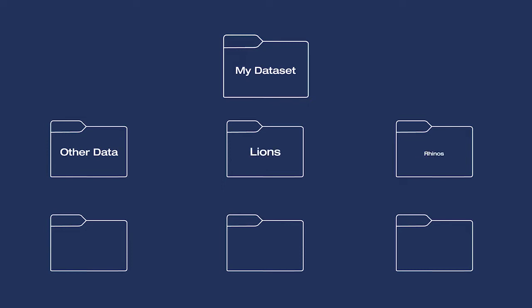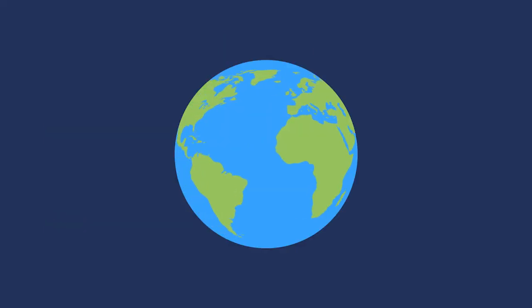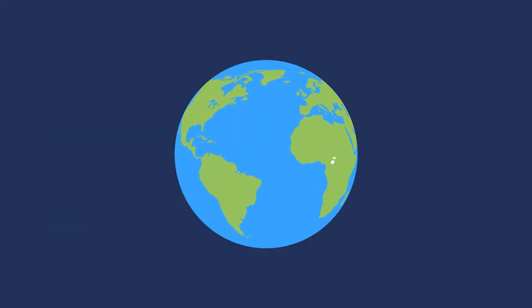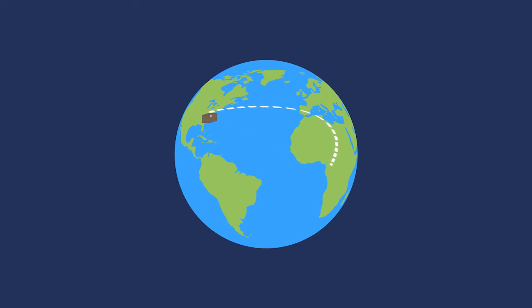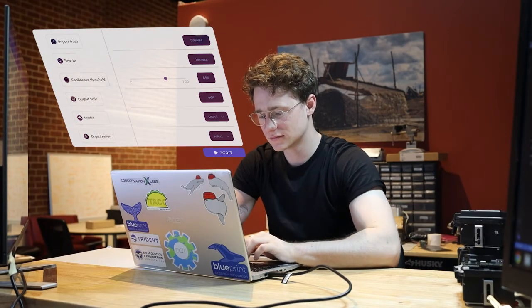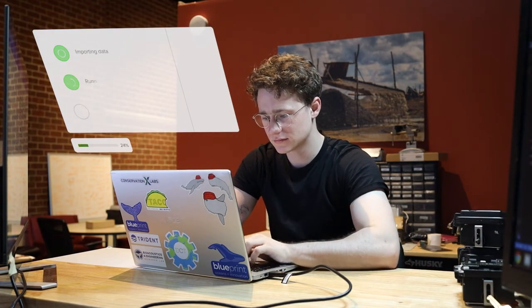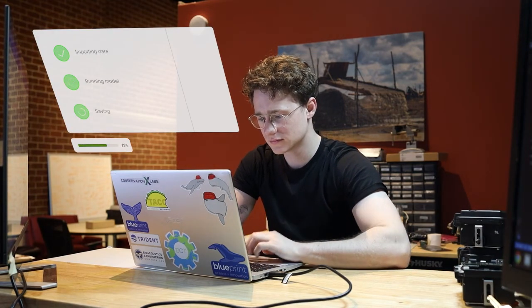For this example, we'll be training a model to identify lions, rhinos, elephants, leopards, and buffalo. Simply share these labeled datasets with us online, or the old-fashioned way, and we'll have a model ready for you in no time. Your new AI model can run on your laptop to process all the data you collect in the future, without having to upload it online.